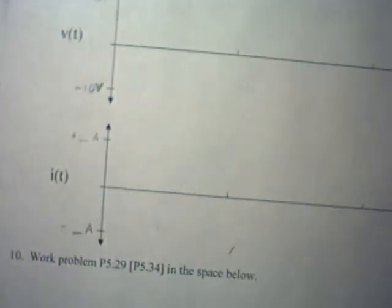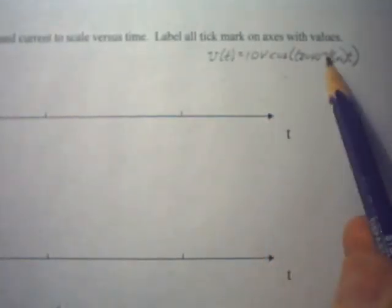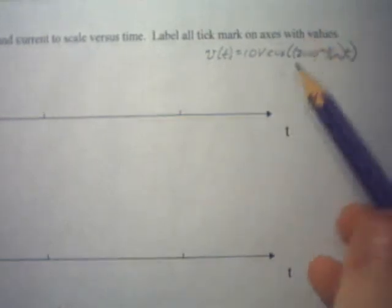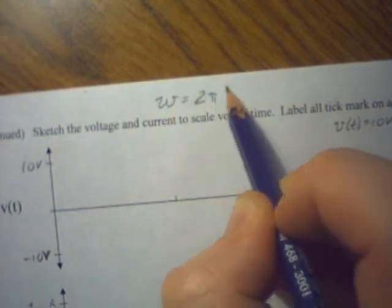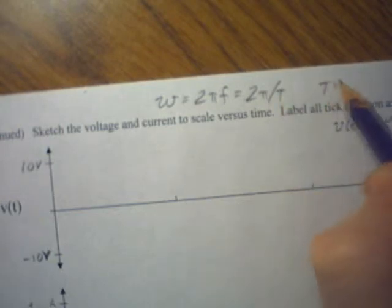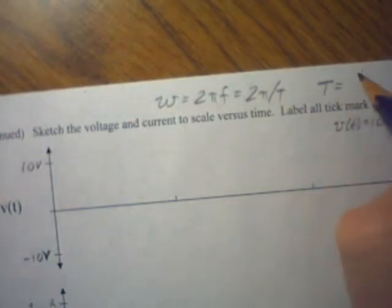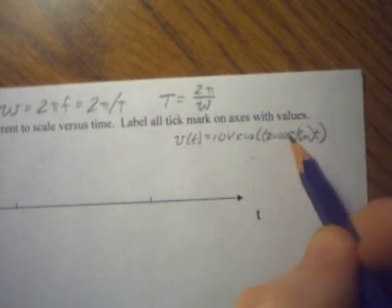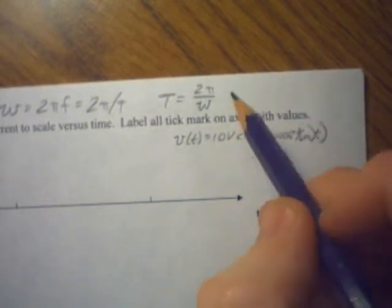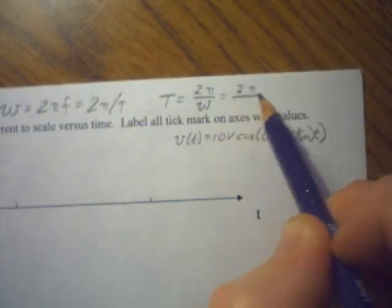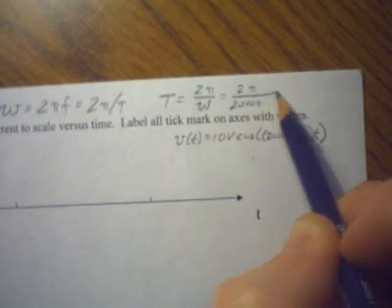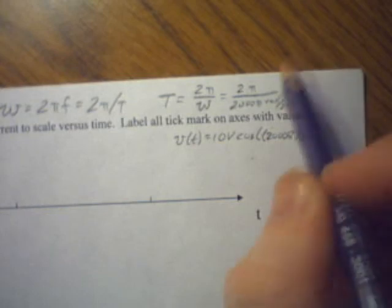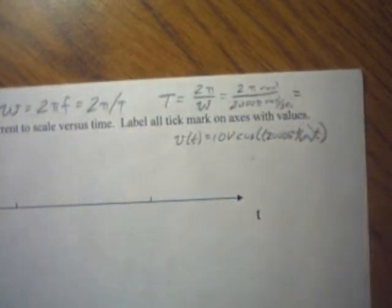And then recall that this is what we had given in the problem, and that is omega. So up here we can say omega is equal to 2 pi f is equal to 2 pi over capital T. This means that capital T is equal to 2 pi divided by omega. And since omega is equal to 2,000 pi radians per second as given in the problem, that's going to be 2 pi divided by 2,000 pi radians per second.